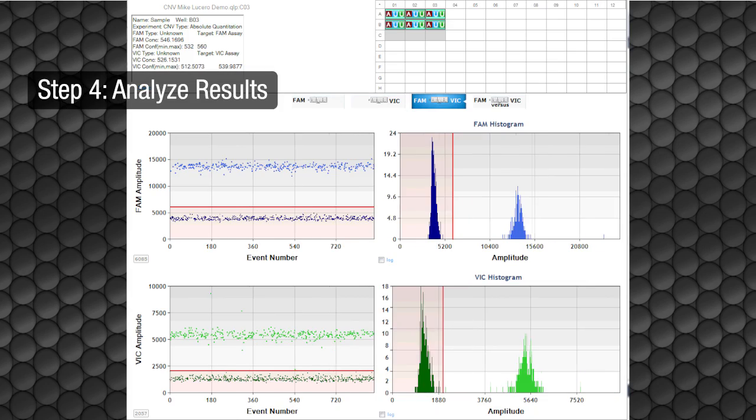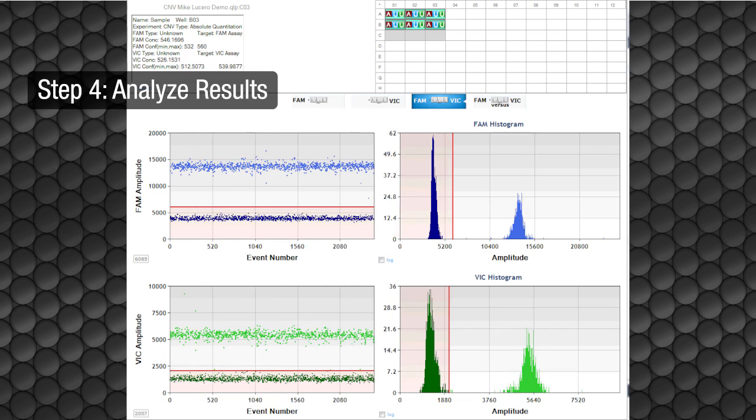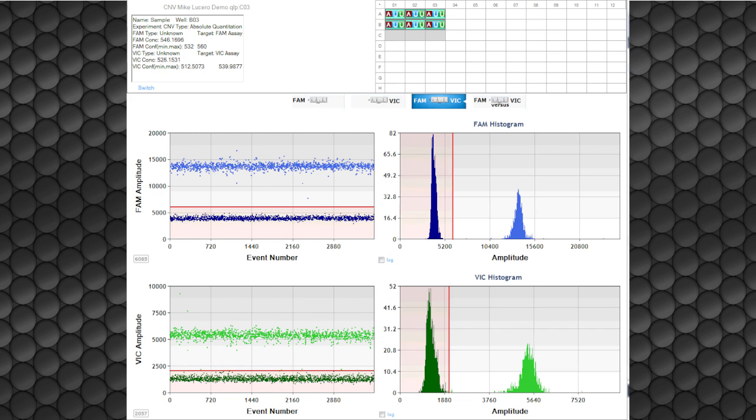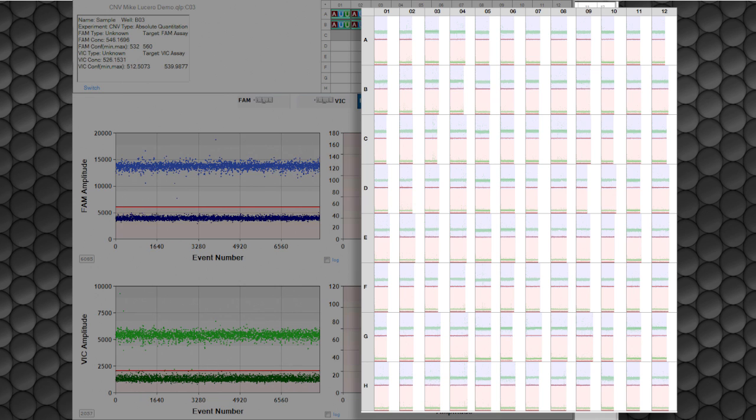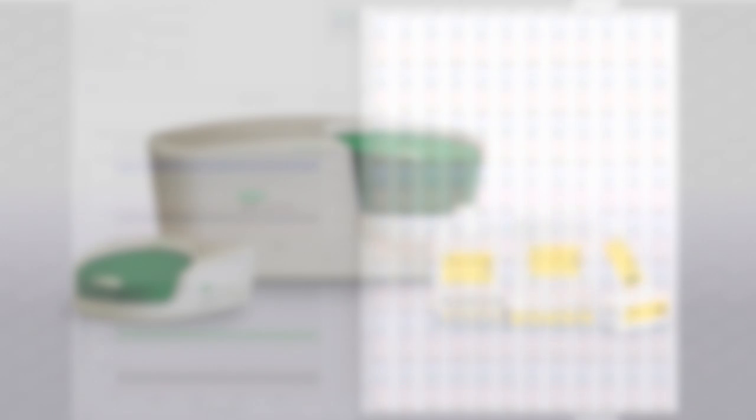As each droplet is read, the data are recorded graphically by QuantaSoft software. The software records the positive and negative droplets in each sample and plots the droplet-by-droplet fluorescence. This allows the data to be analyzed and visualized according to the specific application and research requirements.